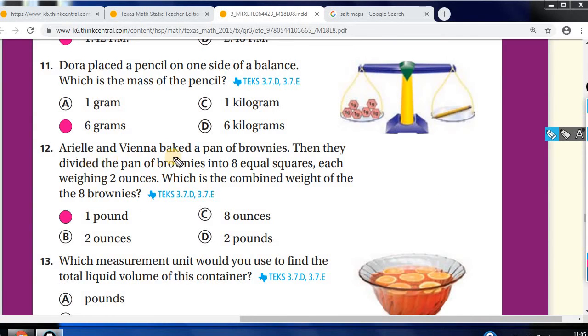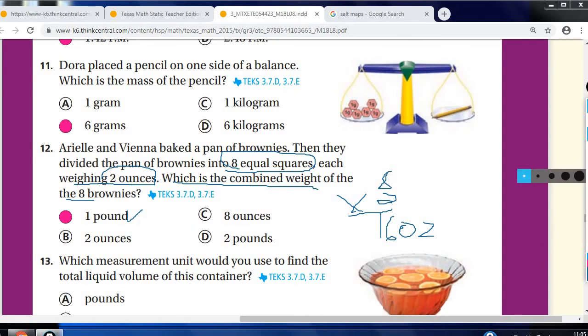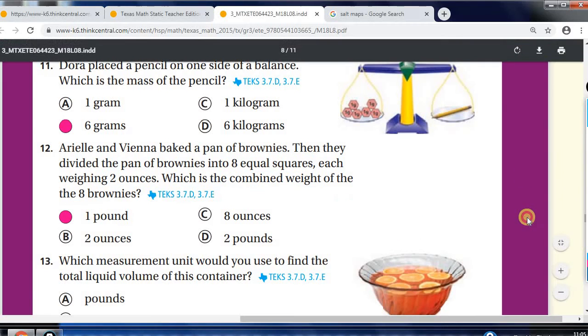Next one. Ariel and Vienna baked a pan of brownies. They divided the pan of brownies into 8 equal squares. Each square, each weighing 2 ounces. What is the combined weight of the brownies? And they're giving you ounces and pounds. So, there's 8 squares. Each one weighs 2 ounces. So, you get a total of 16 ounces. And if you know your units here of weight, you know that 16 ounces make 1 pound. So, that's how we got that one.